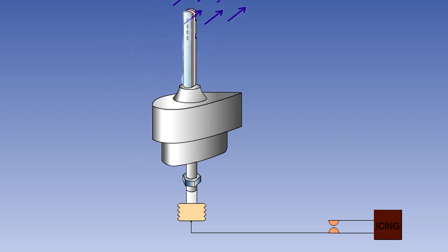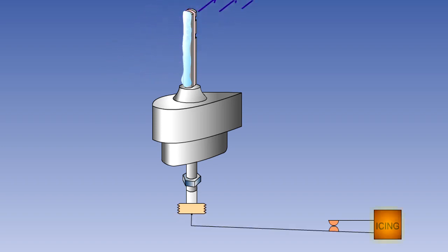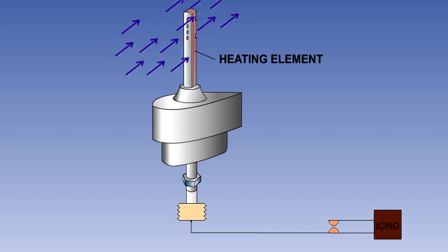In icing conditions, the leading edge holes become blocked by ice, and the pressure in the tube falls. The capsule contracts, causing the ice warning light to illuminate. There is a heater element fitted around the tube to melt accumulated ice. Once again, the more quickly the ice reforms, the more severe are the icing conditions.